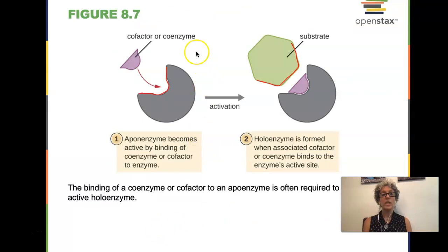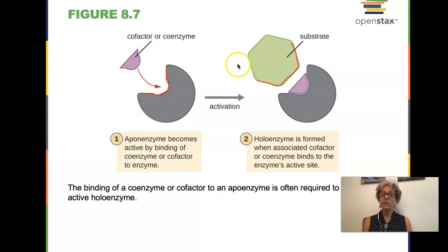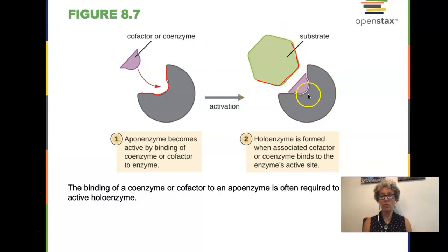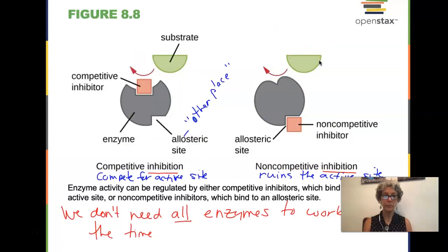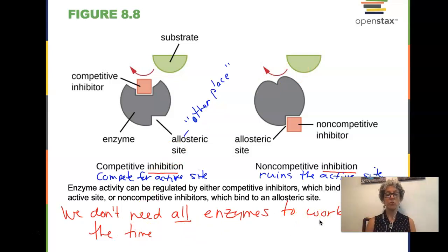There can be coenzymes required. The coenzyme has to bind to create the true active site. Without both the enzyme and the cofactor, the substrate won't fit. We don't need all of our enzymes to work all of the time — we have to control reactions happening when we need them and have them not happening when we don't need them.